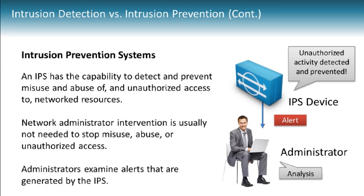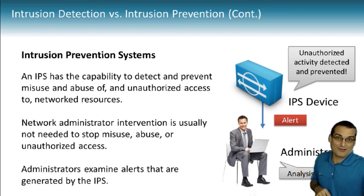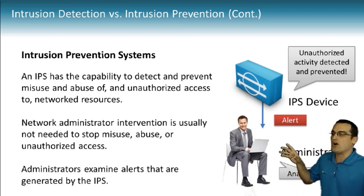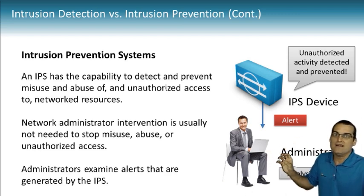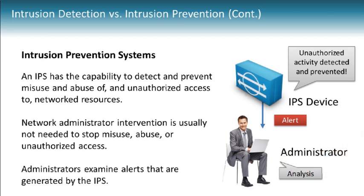With intrusion prevention systems, we are talking about the ability to detect misuse or unauthorized access and being able to stop it. Not only do we stop it, but we still get to alert an administrator. A very important function of both intrusion detection systems and intrusion prevention systems is our ability to let administrators know that bad stuff could be happening. The alerting capability is found in both IPS and IDS, and it's one of the reasons that people love to run these technologies.